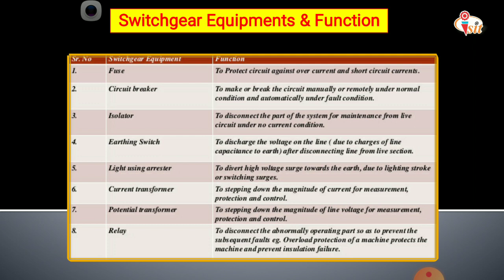The fourth equipment is the earthing switch, whose function is to discharge the voltage on the line after disconnecting the line from the live section, for maintenance purposes. The fifth is the lightning arrester, whose main function is to divert high voltage surges towards the earth due to lightning strokes or switching surges, by providing a low resistance path to ground so that fault current goes directly to ground.